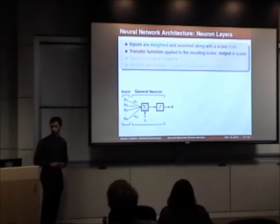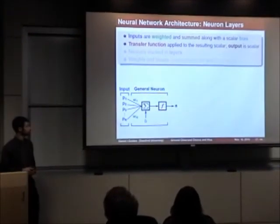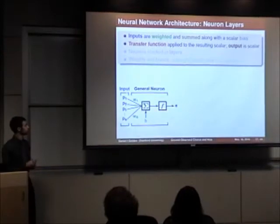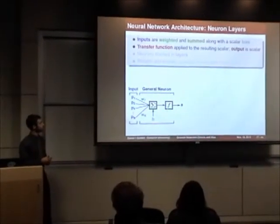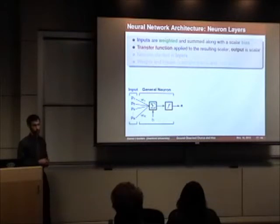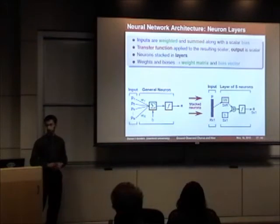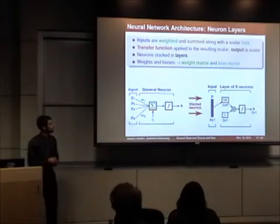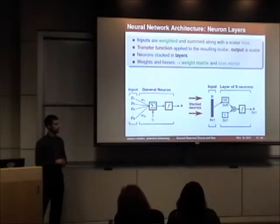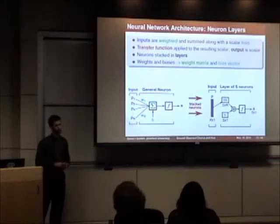The basic constituent of a neural network is an artificial neuron. It consists of a series of scalar values for input — such as the 19 characteristics determined previously — which are then weighted and summed with a scalar bias, passed through a nonlinear transfer function, and the output is a scalar. To increase complexity, neurons may be stacked in parallel layers, where instead of thinking of a series of weights and biases, we think of a weight matrix and a bias vector. This stack of S neurons, each operating independently, then has as output a vector of length S.